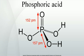Wet process acid can be further purified by removing fluorine to produce animal grade phosphoric acid, or processed by solvent extraction and arsenic removal to produce food grade phosphoric acid. The nitrophosphate process is similar to the wet process except that it uses nitric acid in place of sulfuric acid. The advantage is that the co-product, calcium nitrate, is also a plant fertilizer, though this method is rarely employed.